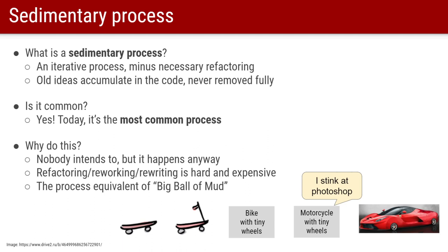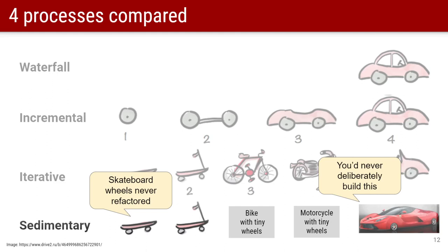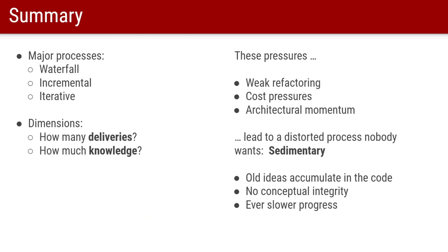I started to do some photoshopping at the bottom to make bicycles with tiny wheels, only to discover that I stink at Photoshop. I did find a picture of a car where someone with mad Photoshop skills has taken glossy brochure pictures of a Ferrari and shrunk it down so the wheels are preposterous. So let's go back and look at the four processes. The big deal about sedimentary development is that even in later generations, when the skateboard wheels should be gone from the code, you're still finding them hanging around. You would never deliberately build a Ferrari with three-inch wheels, but that's what you find yourself running in production.